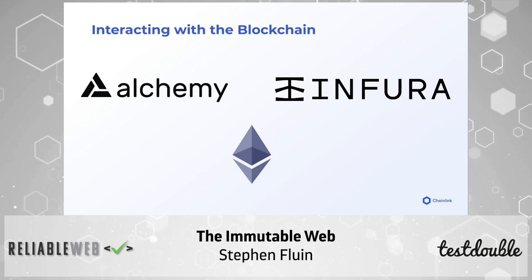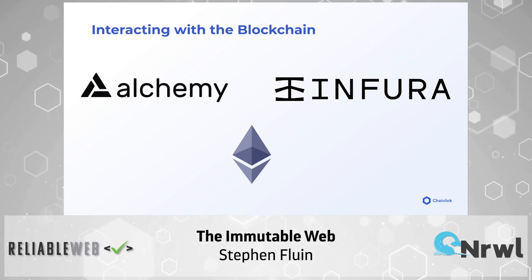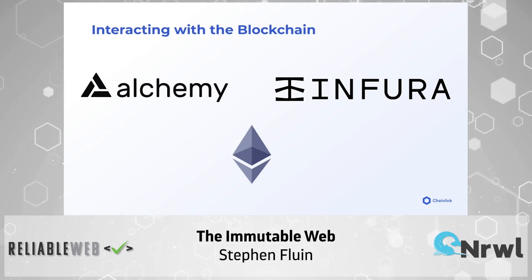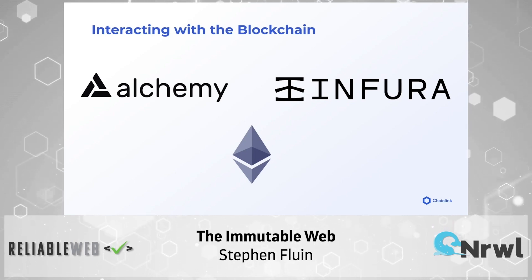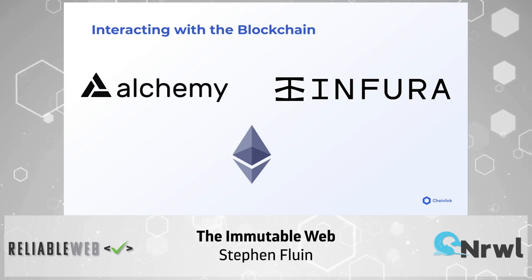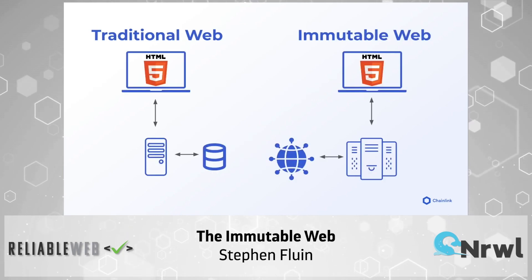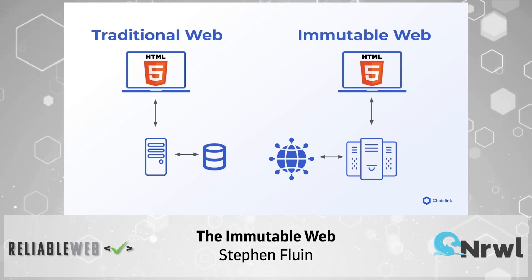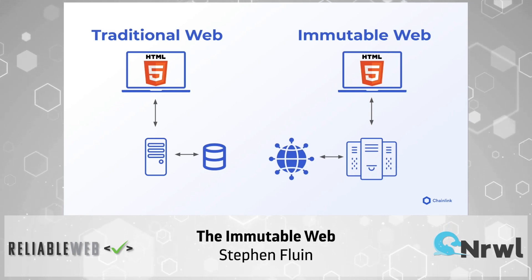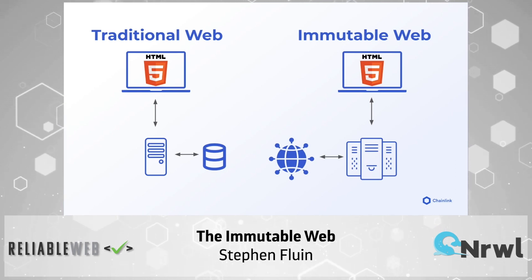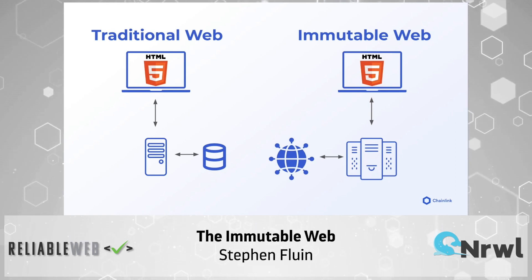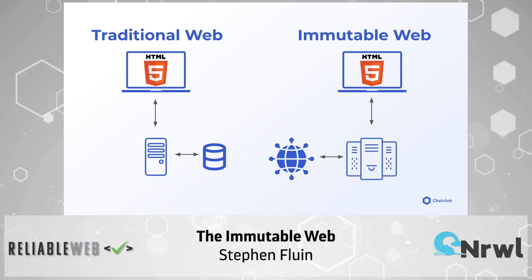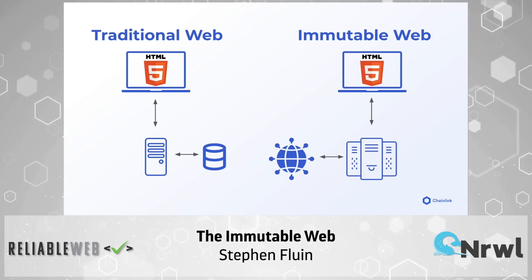To interact with the blockchain you need providers — there are a couple called Alchemy and Infura that give you a JSON API to transact or read values. Because it's decentralized, you can actually run your own node without relying on any intermediate parties. A traditional web application goes from a web interface making XHR requests to a server that refers to a database. The immutable web looks similar: an HTML/JavaScript application interacts with decentralized APIs giving access to the blockchain, and everything you do is recorded in perpetuity across the entire network. From the front end, you can build very similar experiences.